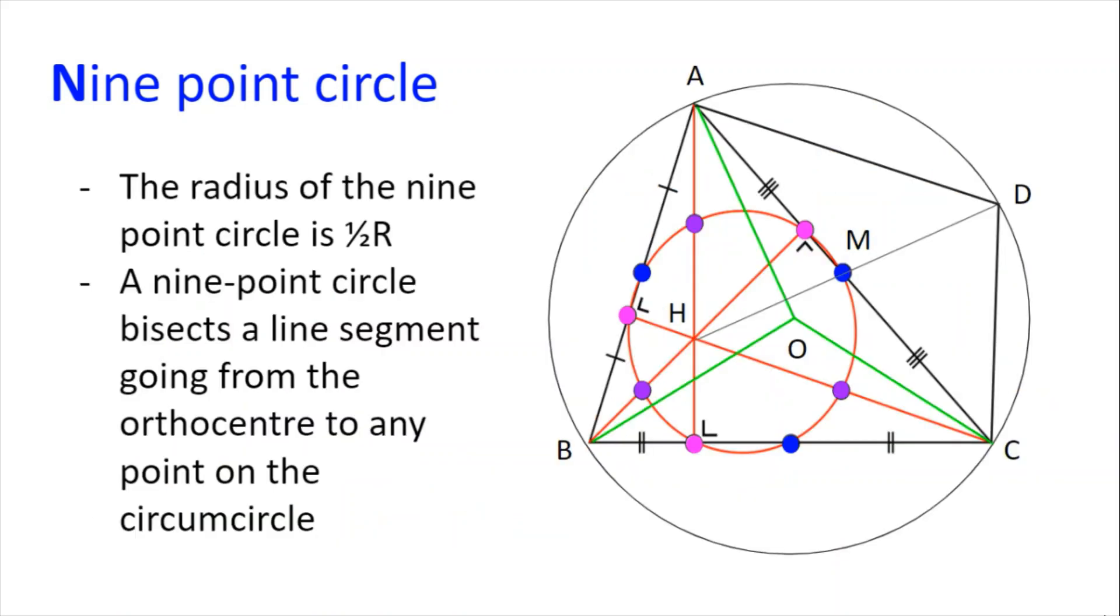There are lots of interesting facts about the nine-point circle. We will include two in this video. The first is that the radius of the nine-point circle is half of the radius of the circumcircle of the same triangle. And the second fact is that a nine-point circle bisects a line segment going from the orthocentre H to any point on the circumcircle.